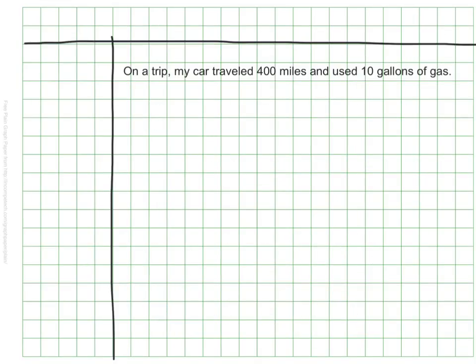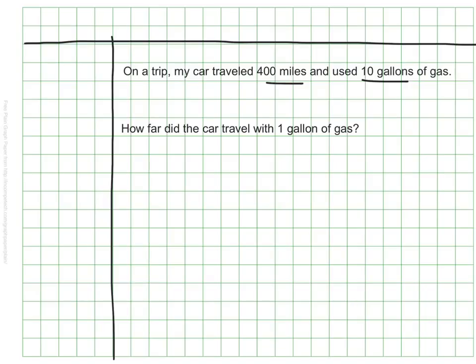Suppose on a car trip, my car traveled 400 miles and used 10 gallons of gas. We see there's a rate here comparing the number of miles traveled with the number of gallons of gas used. I can use the unit rate to see how far my car was able to travel on one gallon of gas — we often hear this as miles per gallon, the miles we could go on one gallon.